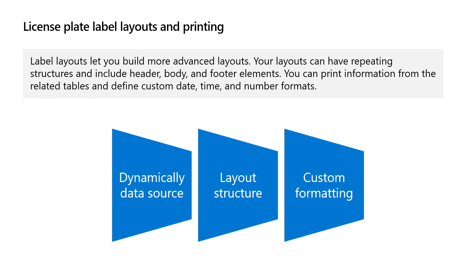The second point is the layout structure. Using LabelLayout you could define the label in a structured way: header, body, and footer. So you could print repeated lines in the body section, like for example the work lines, and keep the static values in the header and footer, like the work header information.